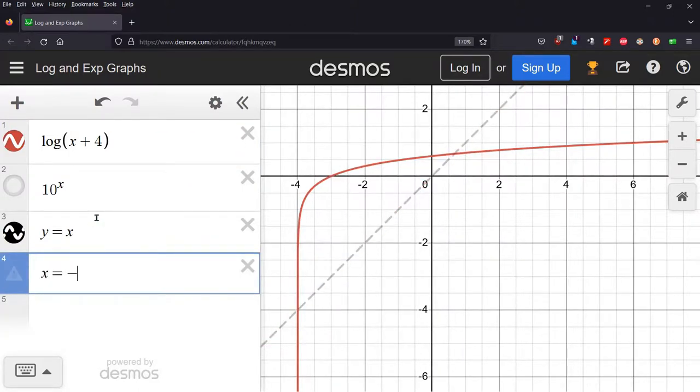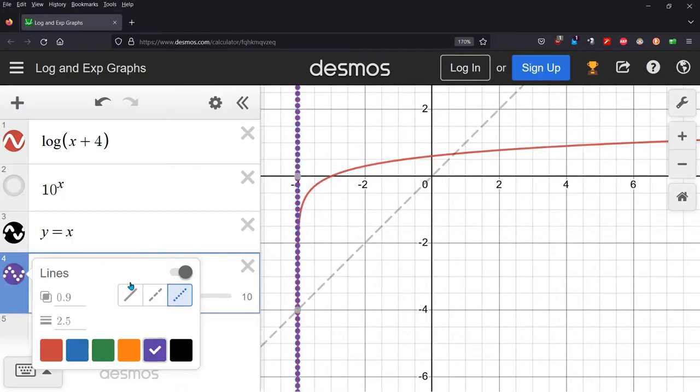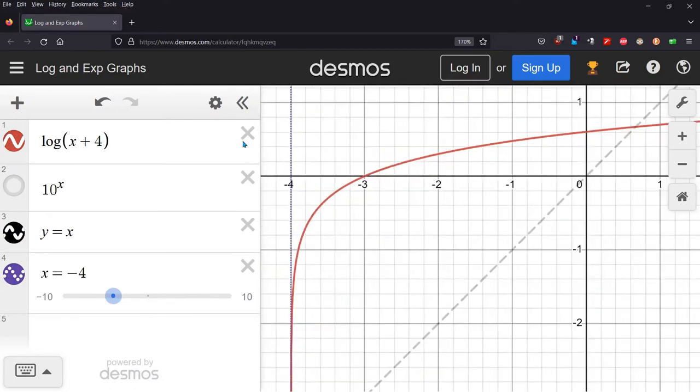And you can totally graph it right here. Usually graph the dotted. That would be, wow, that's really thick. All right, good enough. That's the vertical asymptote right there at negative 4.